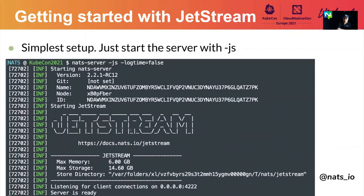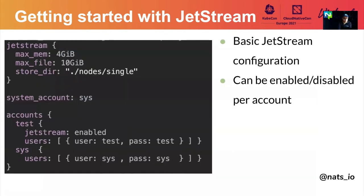By default it has dynamic limits, but for production-recommended setups you should allocate how much memory and storage you want to use for Jetstream. Setting up Jetstream is quite straightforward — it just takes, for a production setup, specifying how much memory you want to use and what the storage directory will be. In this case, we're already setting up a system account named Sys.